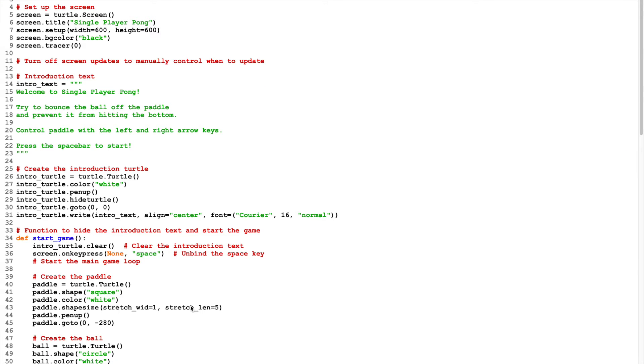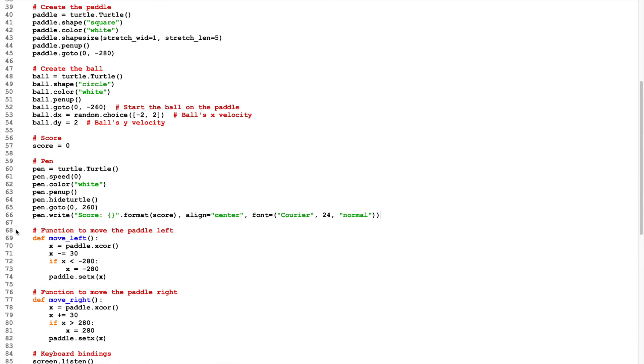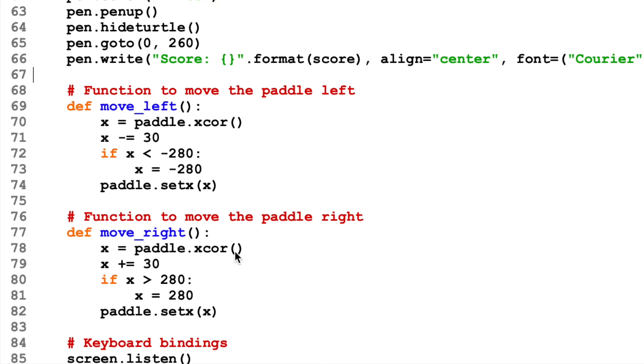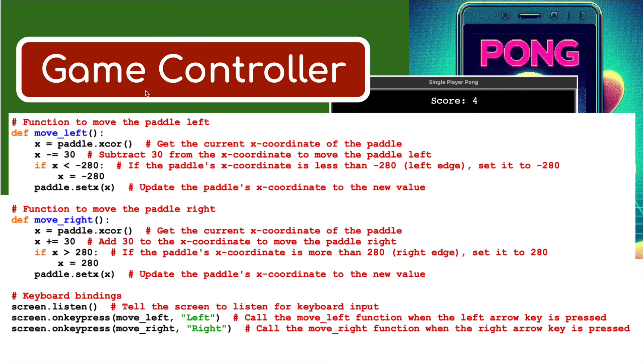Just to show you this in Python, we are now at line 68. We've just completed the first 66 lines of code. Next step, let's have a look at how we're going to control the paddle and move it from left to right. Game controller.